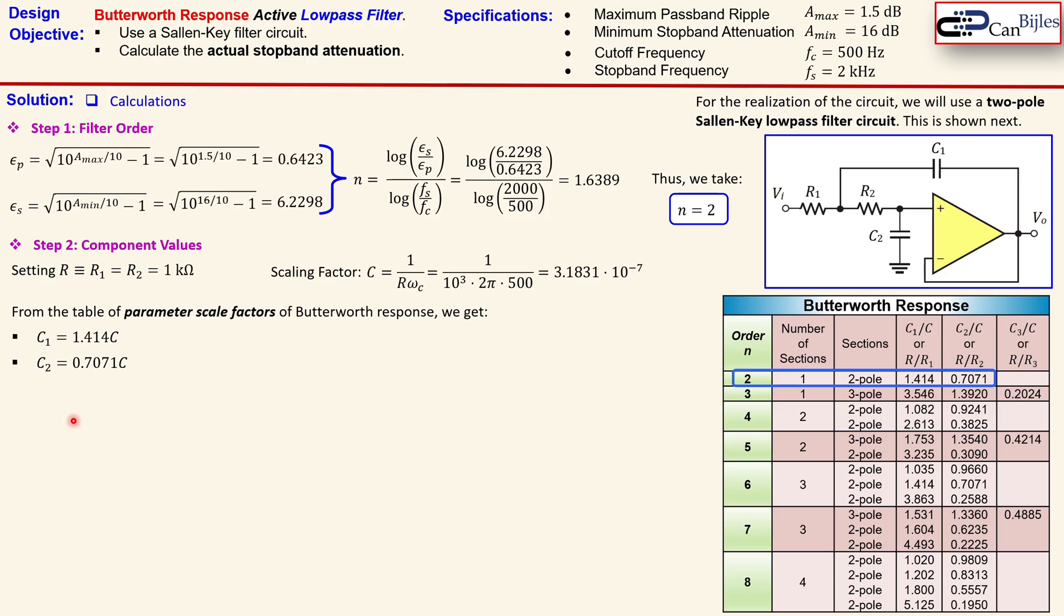So we are actually almost done. We just substitute here this C or scaling factor. That means 1.414 times this 3.1831 times 10 to power minus 7.